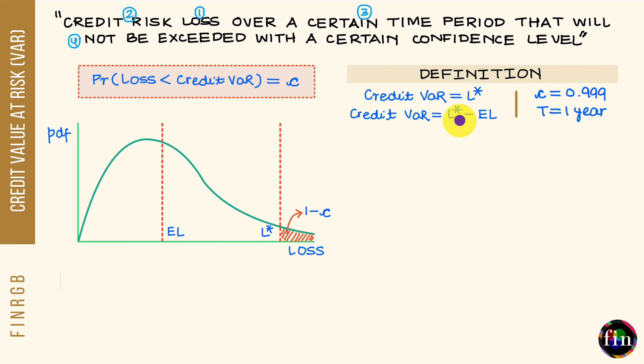These are my two definitions of credit VAR that you have to keep in mind. Now what is the purpose for calculating credit VAR? Well, the purpose is to estimate the capital that you will need to absorb or act as a buffer against unforeseen credit risk losses. You can use credit VAR for the purpose of estimating your economic capital, you can use it for the purpose of estimating your regulatory capital.